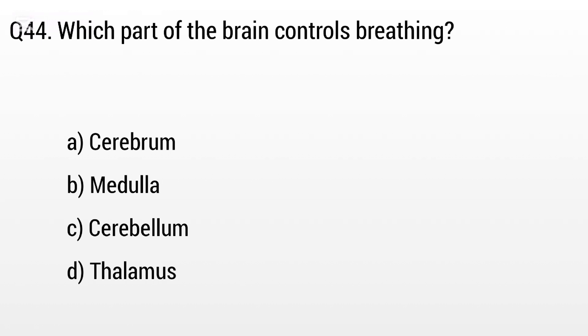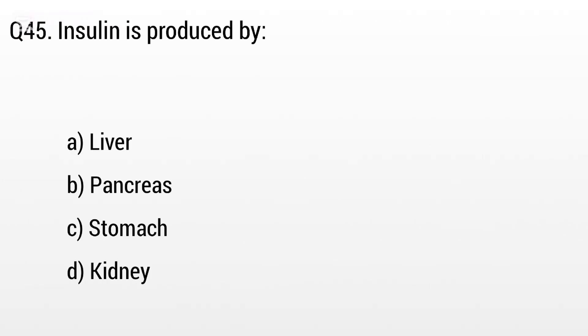Question 44. Which part of the brain controls breathing? Option A: Cerebrum, B: Medulla, C: Cerebellum, D: Thalamus. The right answer is option B, Medulla.